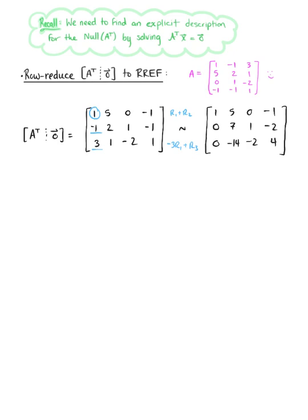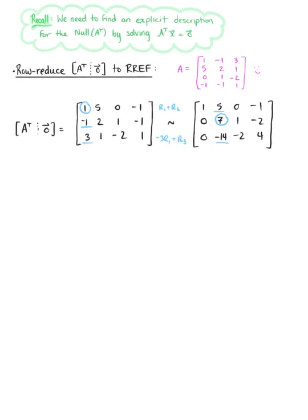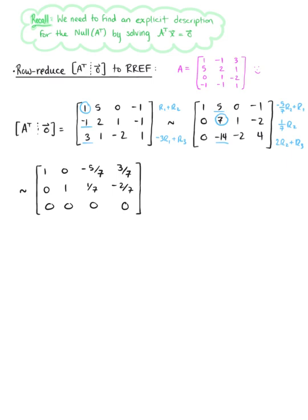Our first column is all set, and we move to the second pivot position, which we want to use to eliminate entries above and below it. We do -5/7 times the second row plus the first row, 1/7 times the second row, and 2 times the second row plus the third row. The third row gets eliminated entirely, leaving row-reduced echelon form with row 1 as (1, 0, -5/7, 3/7) and row 2 as (0, 1, 1/7, -2/7).